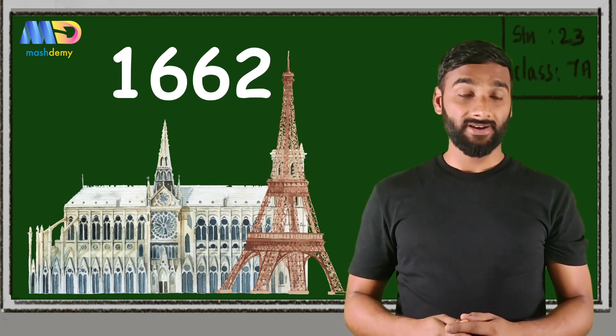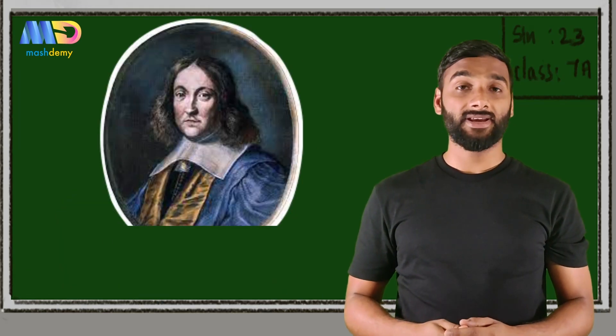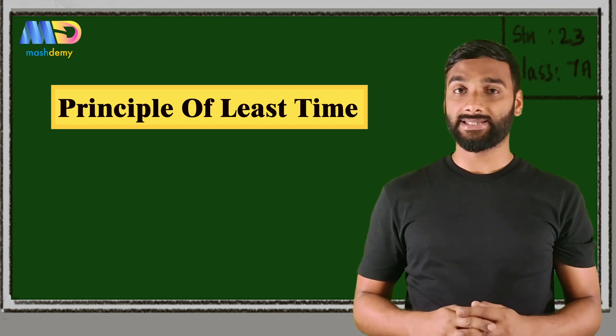To answer this question, let's go back in time to 1662 France, where a mathematician named Pierre de Fermat gave the principle of least time.